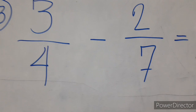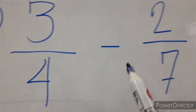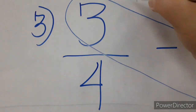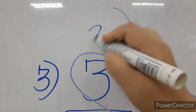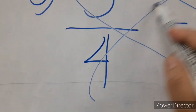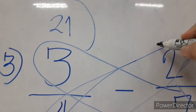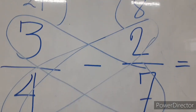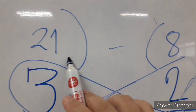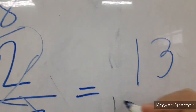Next, let us do the same in subtraction of unlike fractions. So we have here 3 fourths minus 2 sevenths. So we have here 3 times 7 is 21. Let's put here 21. Next, 2 times 4, which is 8. Since this is subtraction, we are going to subtract 21 minus 8. So we have 13 as our new numerator.